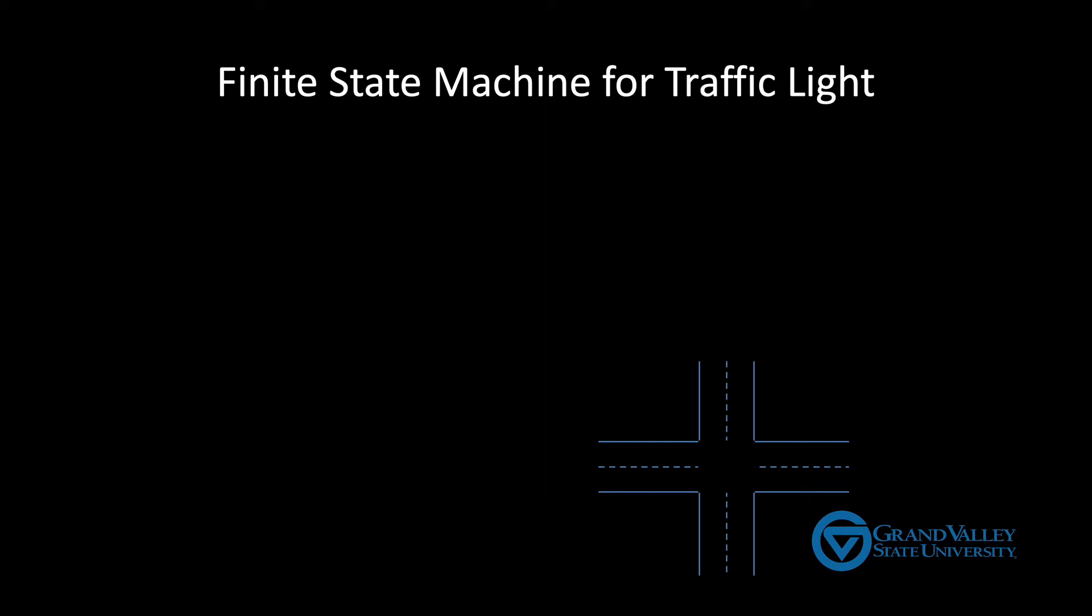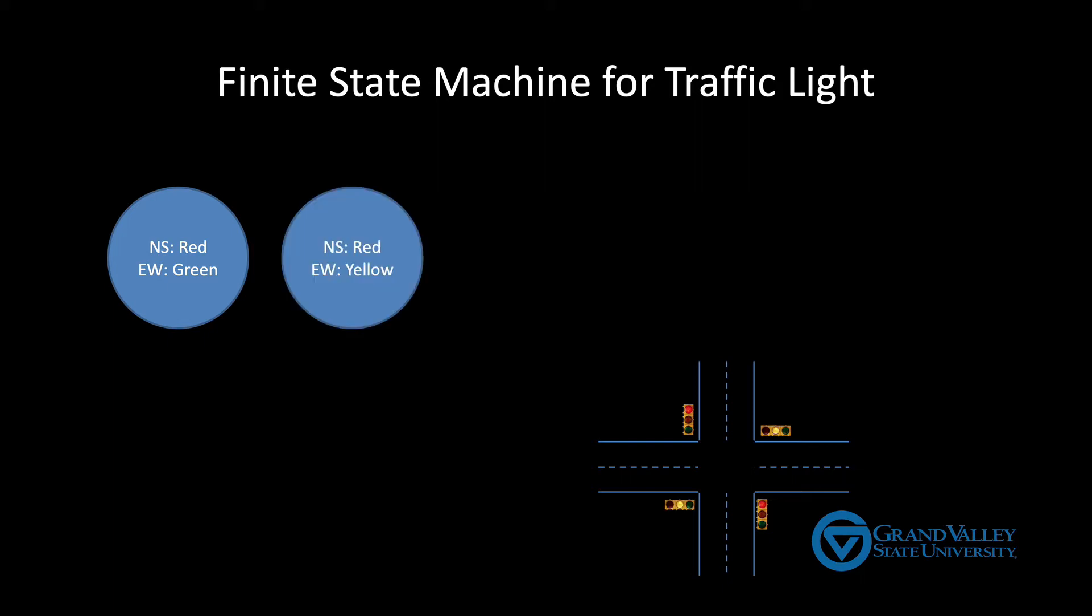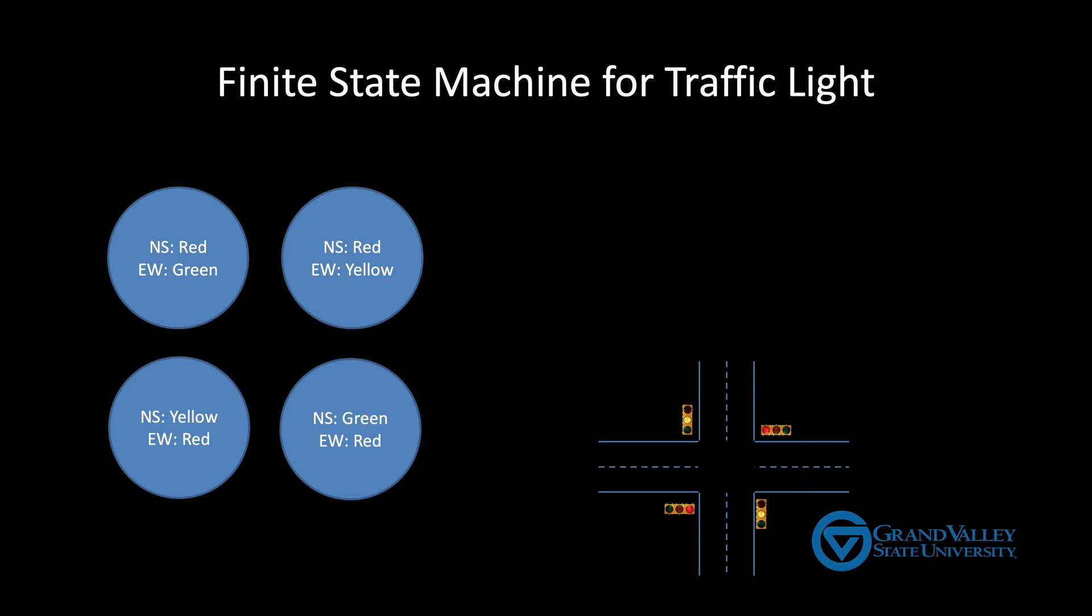So this simple system is only ever in one of four states. The north-south road could have a red light while the east-west road has a green light, or the north-south road could have a red light while the east-west road has a yellow light, or north-south could be green while east-west is red, or north-south could be yellow while east-west is red.